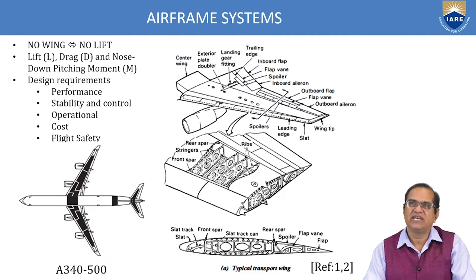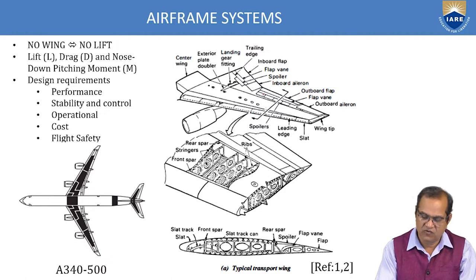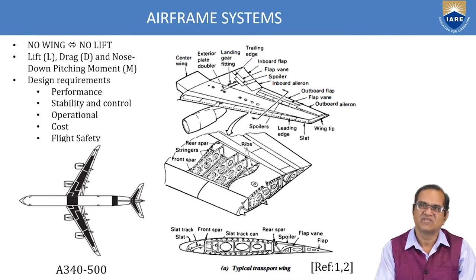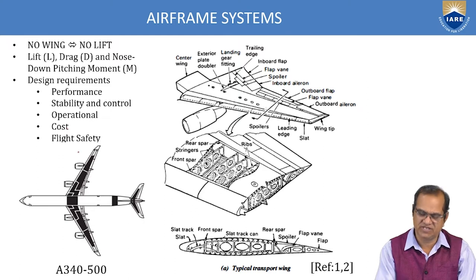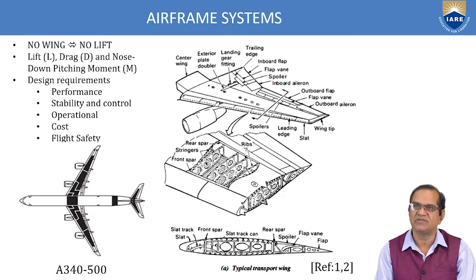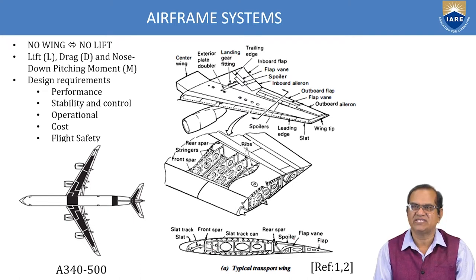Now discussing the airframe system in detail. The wing is essential — no wing, no lift. The wing produces lift, drag, and a nose-down pitching moment. Design requirements include performance, stability and control, operational cost, and flight safety. The wing configuration includes the aerofoil, straps, flaps, vanes, spoilers, rear spar slide track, and front spar slide track.